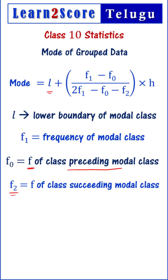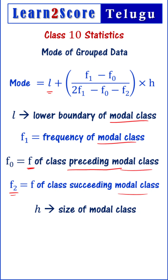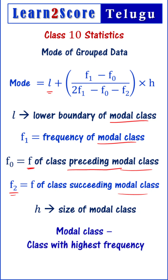H is the size of the modal class. The modal class is the class interval that has the highest frequency. The class with the highest frequency is called the modal class.